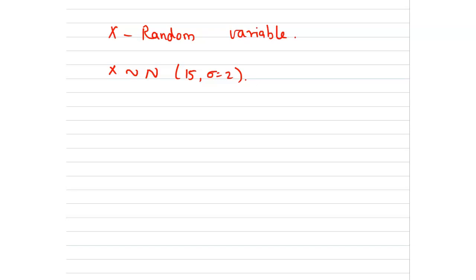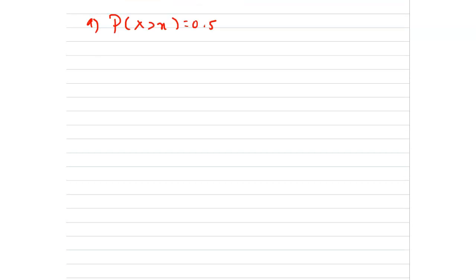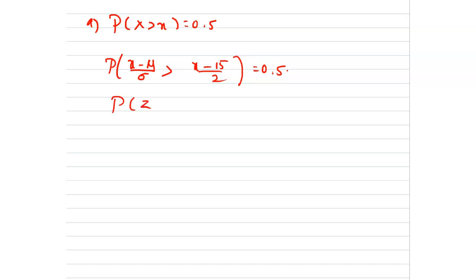We have to find p of x greater than x equal to 0.5. Now we are converting into the z variable. So we can write it as p of (x minus mu) divided by sigma greater than (x minus 15) divided by 2, which equals 0.5. So p of z greater than (x minus 15) divided by 2 equals 0.5.